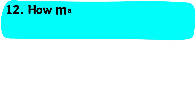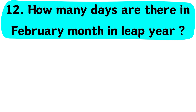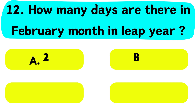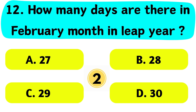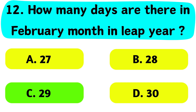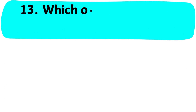Question No. 12. How many days are there in February in a leap year? A. 27, B. 28, C. 29, D. 30. The correct answer is Option C. 29 days.